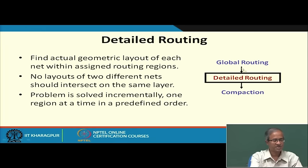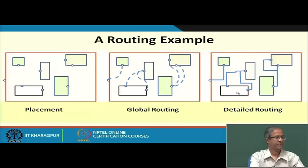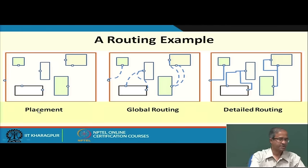There are obvious requirements: two different nets should not intersect on the same layer, as there will be a short circuit. So if there are two different nets, they have to be laid out in a disjoint fashion with non-intersecting line segments. This problem is solved by considering one region at a time in a particular order. Detailed routing follows global routing, and once done, we can have other steps like compaction.